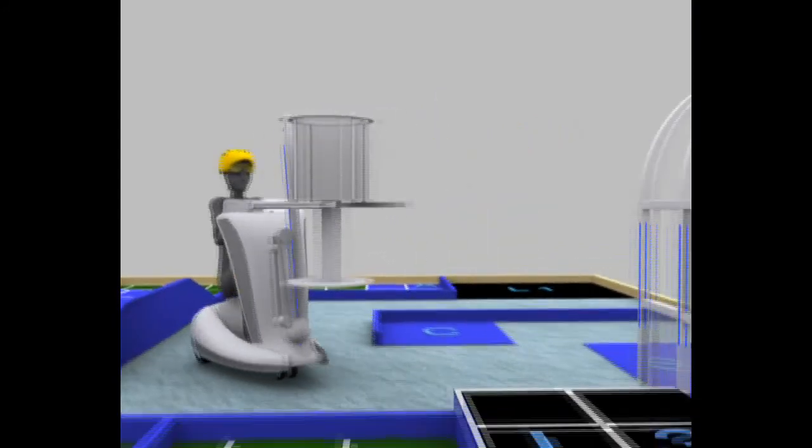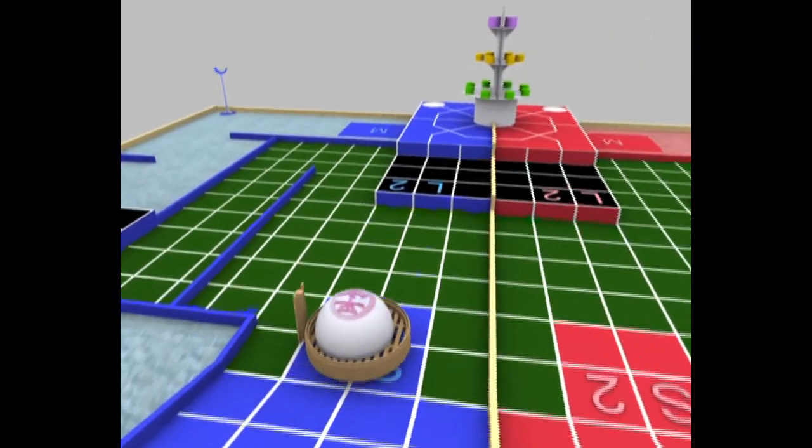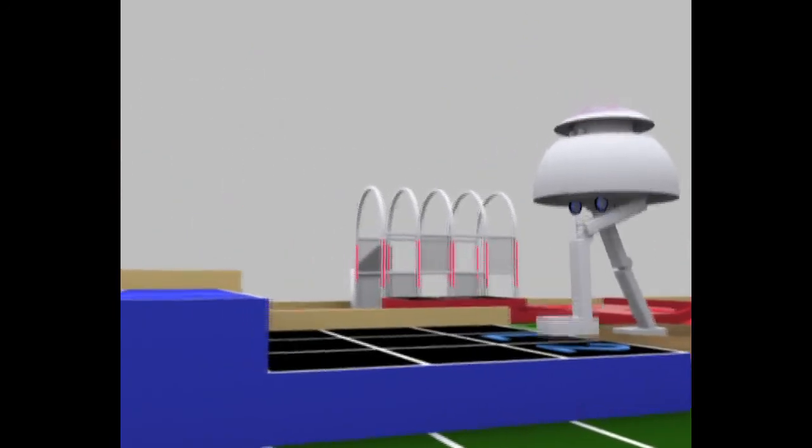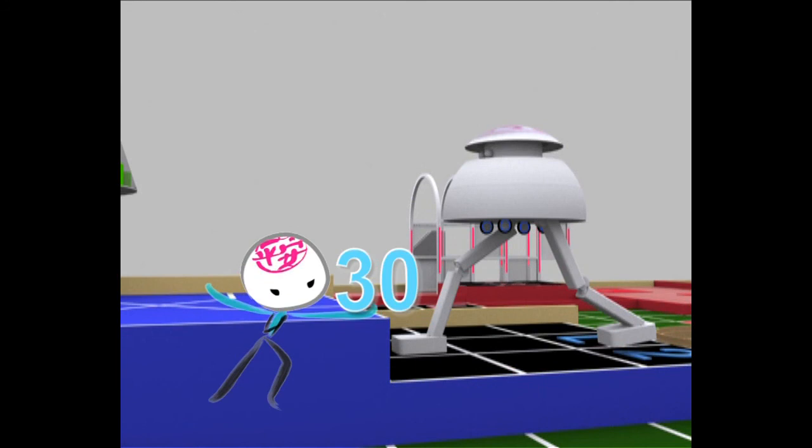There are two options for the automatic robot to unload the collector robot. The first option is to unload the collector robot inside the loading area 2. You score 30 points for this.